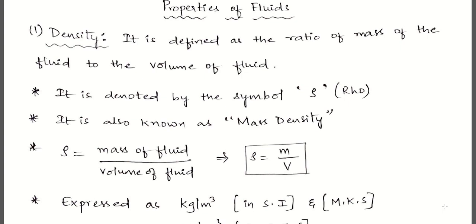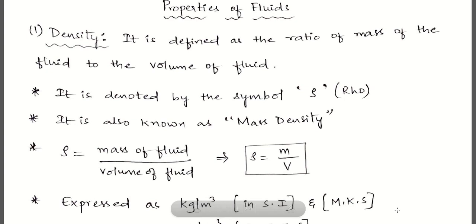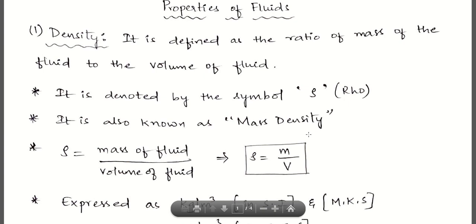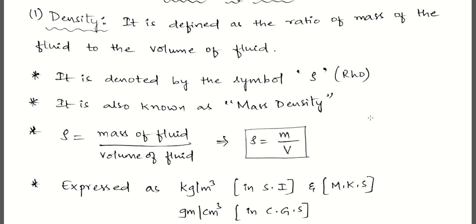So what is density? Density is defined as the ratio of mass of the fluid to volume of the fluid. It is M by V and is denoted by the symbol rho — these are all standard notations. It's the ratio of mass of fluid to volume of the fluid, hence it's also called mass density.